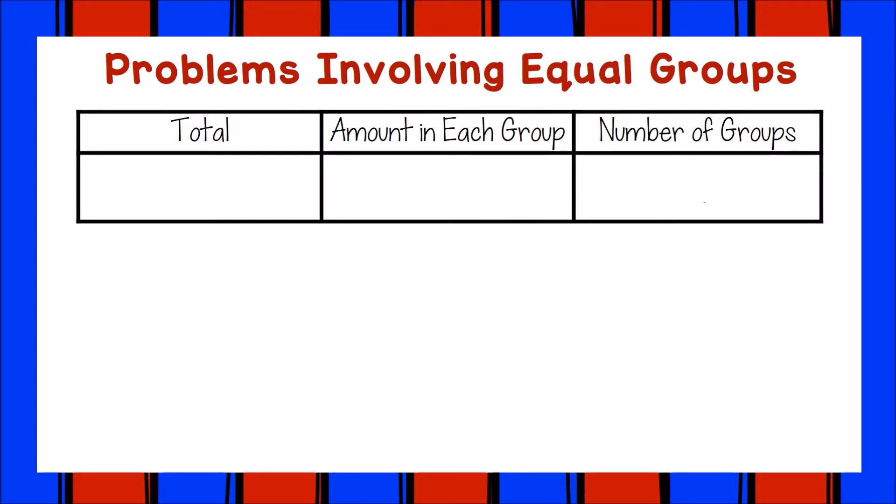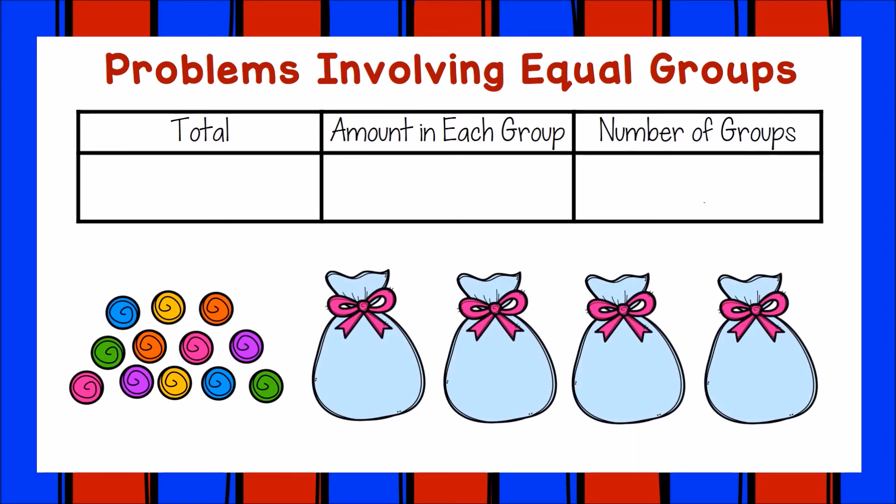In this new problem we do know the total amount. Here it is. Miguel has 12 candies and he wants to put an equal amount into each of four bags. How many candies will go into each bag? This time we do know the total amount is 12. We also know that we want to put the candy into four equal groups. We just don't know how many candies will go into each group.